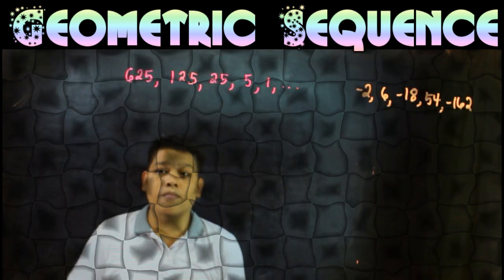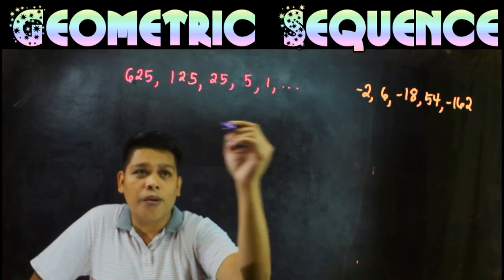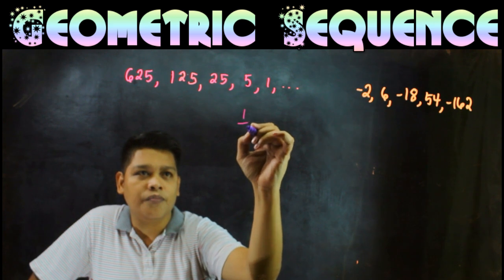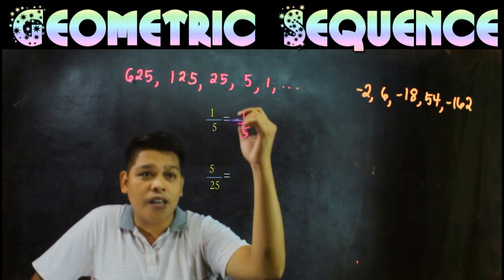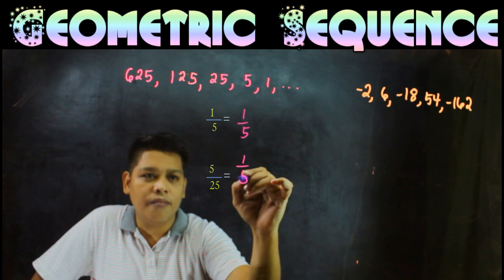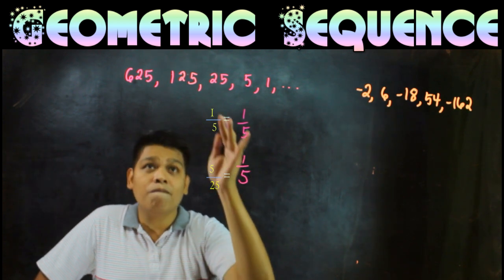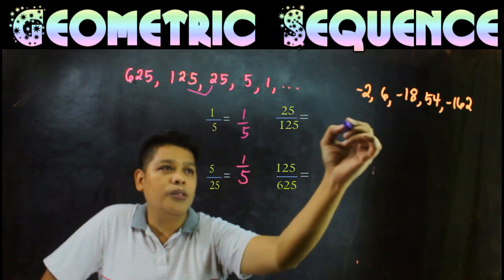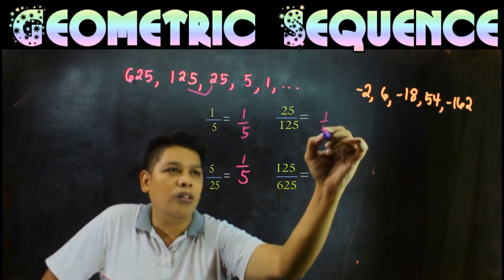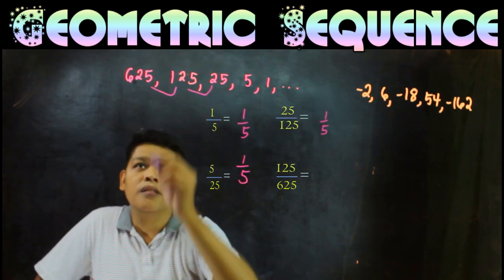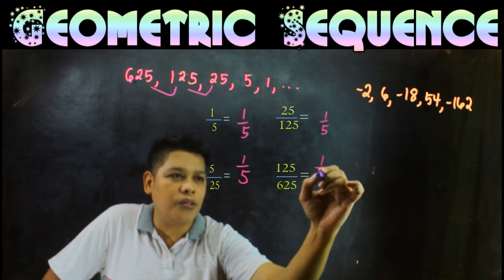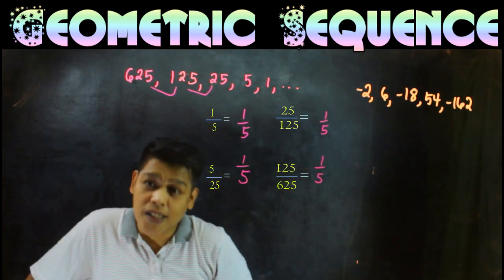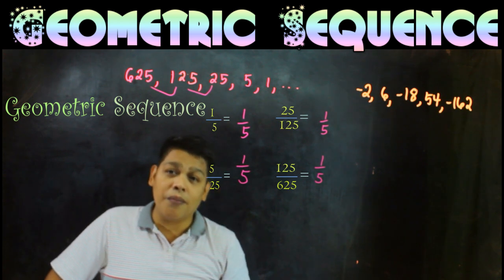Another example. 1 over 5 divided by 1 equals 1 over 5. Then 5 over 25 is 1 over 5. Then 25 over 125 is 1 over 5. Then 125 over 625 is 1 over 5. This means it's geometric with common ratio 1 over 5.